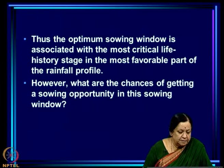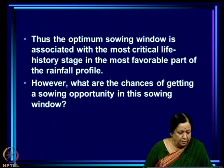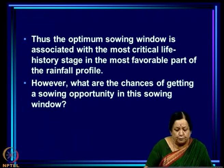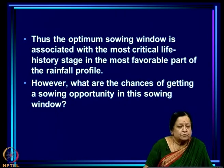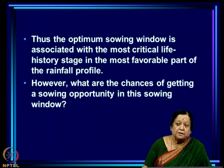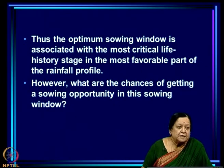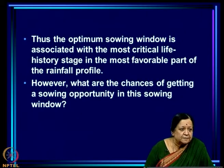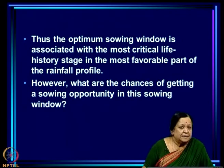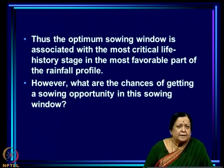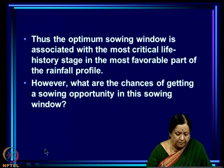Everything ties together nicely. We found the optimum sowing window, showed pod filling is most critical, and explained why. Now the question is: farmers look for opportunities to sow from the last week of June and like to sow in early Poonar Vasu, 6th to 20th July — 15 days before our optimum. We tell them to wait two more weeks. Then they ask: if we give up an earlier sowing opportunity in July, what guarantee is there that another opportunity will arise in late July?